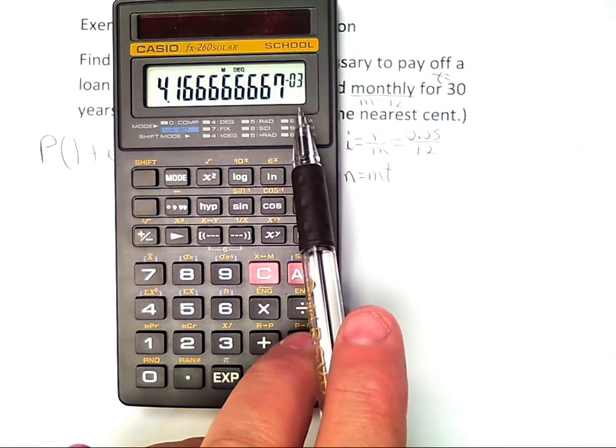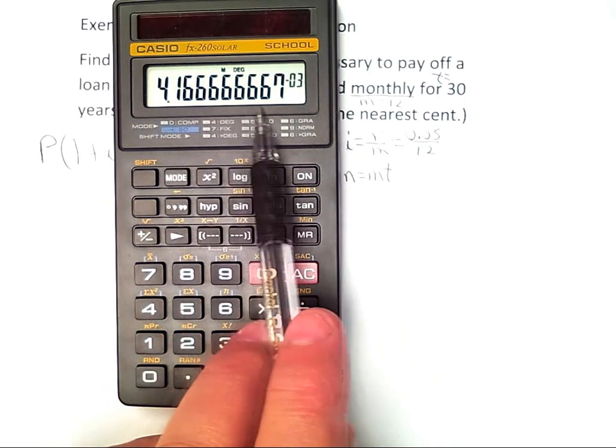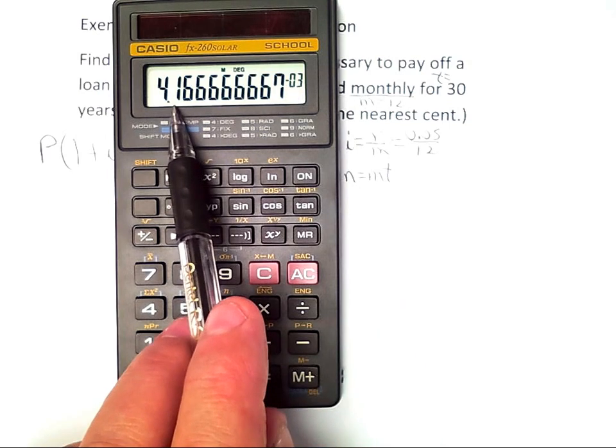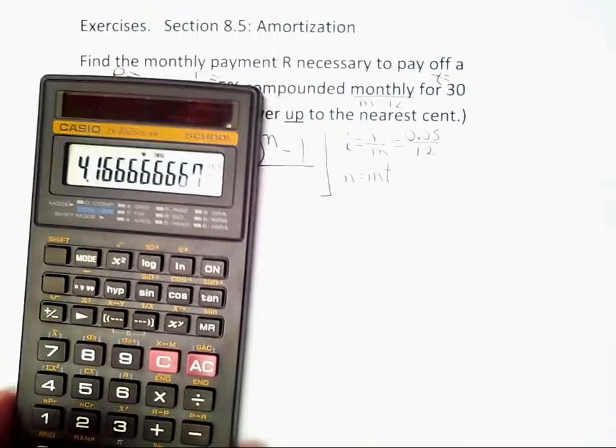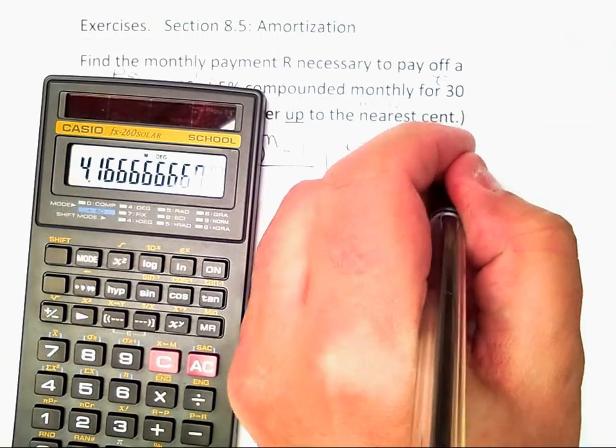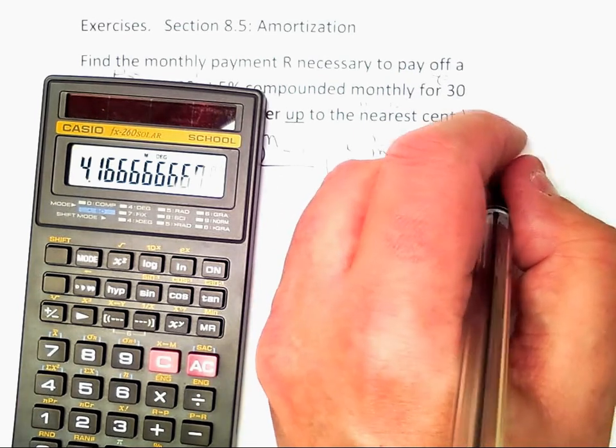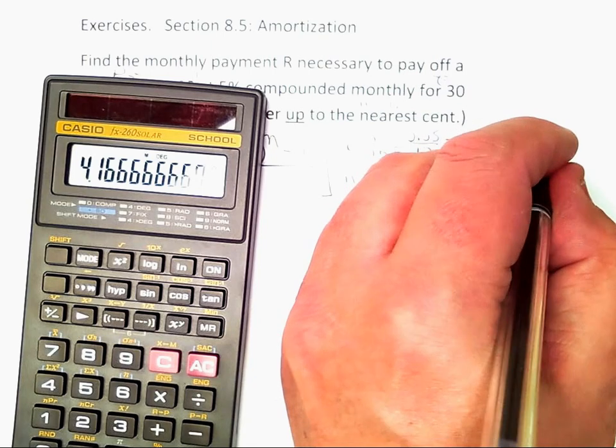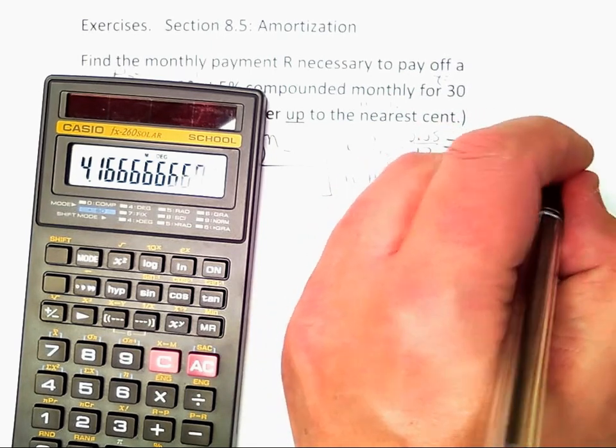This is the calculator's attempt at scientific notation. It simply means take the value displayed, but because that's a negative exponent, you move the decimal place two places to the left. So what you end up with would be 0.0041, and then 6 keeps repeating.